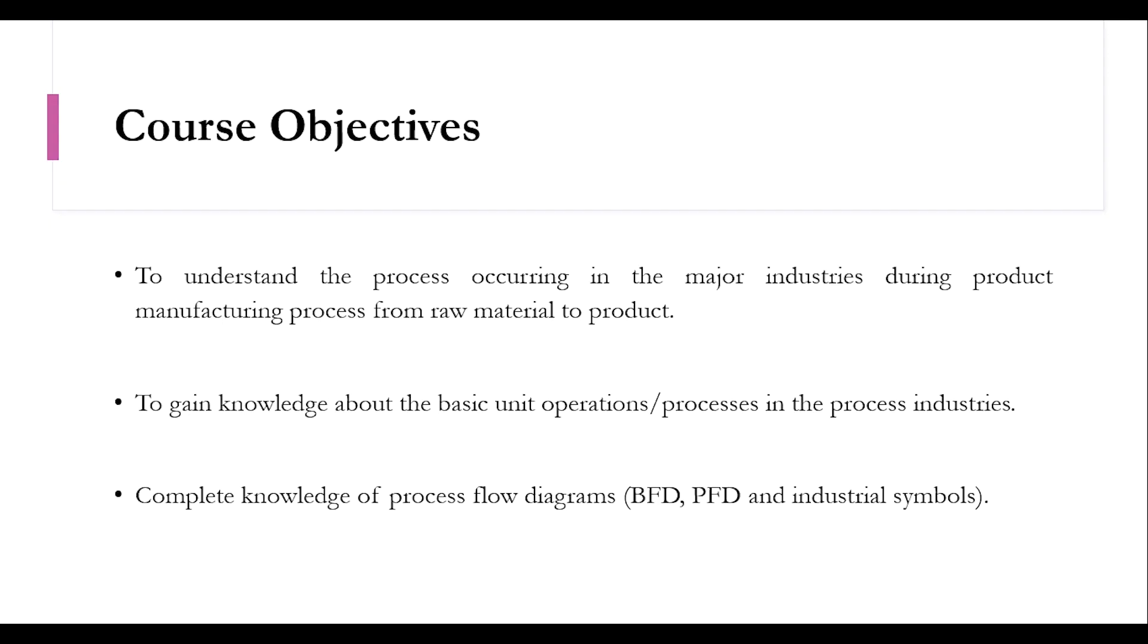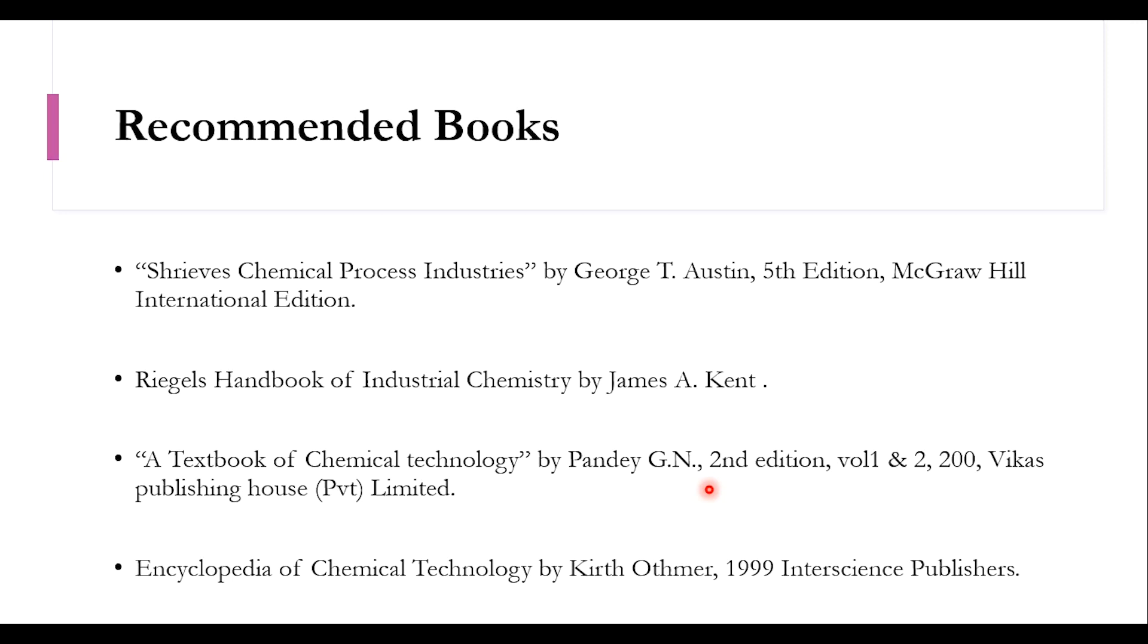What is the objective of this course? Number one is to understand the process occurring in major industries during product manufacturing process from raw material to product. To gain knowledge about the basic unit operations and processes in industries. Complete knowledge of process flow diagrams PFD, BFD and industrial symbols. BFD stands for block flow diagram, PFD stands for process flow diagrams. The books recommended are Shreve's Chemical Process Industries, Riegel's Handbook of Industrial Chemistry, A Textbook of Chemical Technology, and Encyclopedia of Chemical Technology by Kirk-Othmer.